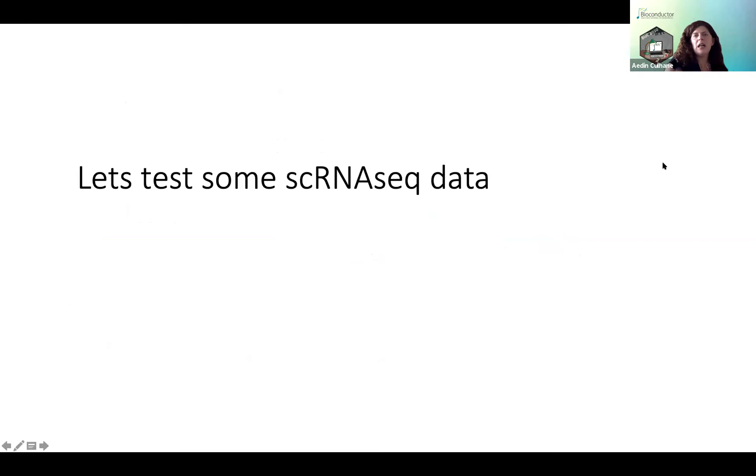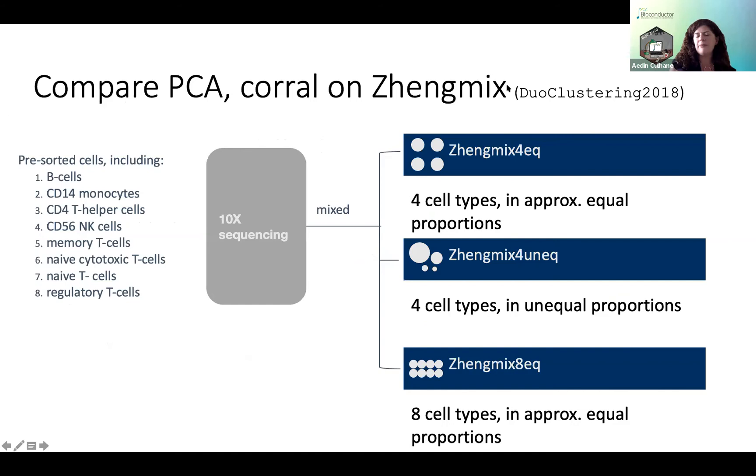And the dataset we're going to look at is the ZENG mix data. Lauren, do you want to describe it? Sure. Yes. So the ZENG mix dataset comes from the Duo Clustering 2018 package, and it includes eight types of pre-sorted cells, including these various immune cells. And they all go through 10X sequencing, and then they are then mixed into these different datasets to be used as a benchmarking for methods. So ZENG mix4EQ contains four of these pre-sorted cell types mixed in approximately equal proportions. And this is kind of like the easiest one where most methods do pretty well on this. And then ZENG mix4 uneq takes four cell types in unequal proportions. So they're imbalanced groups or imbalanced classes. And then ZENG mix8EQ takes all eight of these in approximately equal proportions. However, it is also more challenging than the first one because there are many more classes.